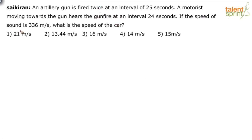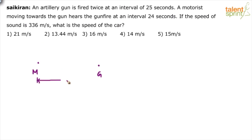Now if the speed of the sound is 336 meters per second, what is the speed of the car? Let us assume this is the point where we have the motorist and this is the point where we have the gun. The distance between these two is, let's say, D.